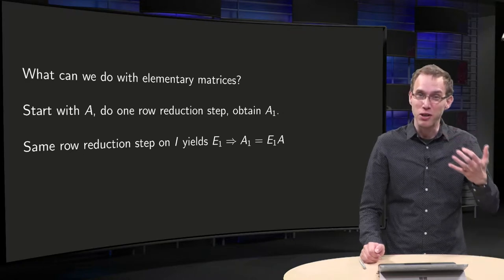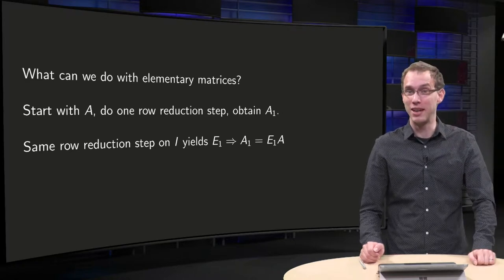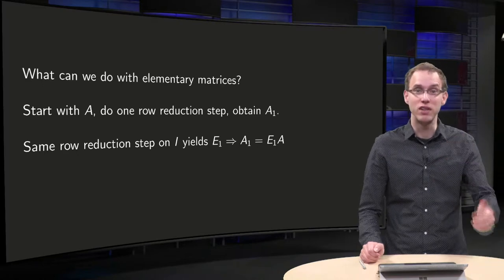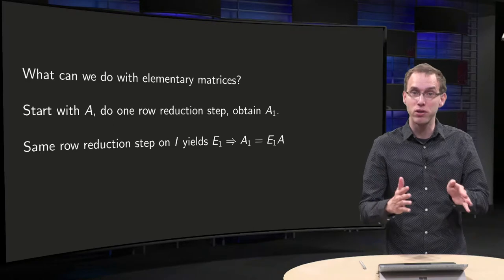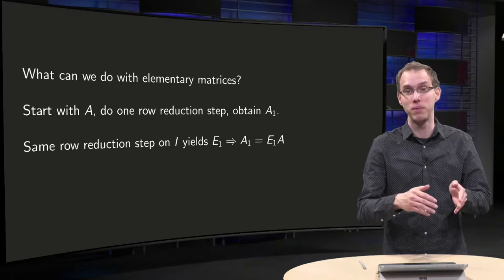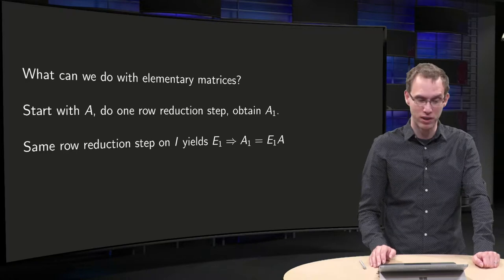Now let us pick row operations that reduce A to a reduced echelon form. That means we can write the reduced echelon form of A as a product of some elementary matrices and A, as you will see in this video.